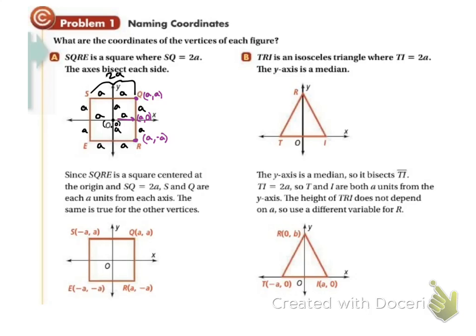Let's do the same thing on the other side. Starting back at the origin, if I move to the left, my x is changing and my y is still 0. I went left a, and going left is negative, so my x coordinate is negative a — giving (−a, 0). Moving down to that vertex changes y: x stays negative a and going down is negative a, so that point is (−a, −a). Going back and up a gives us (−a, a) since up is positive.